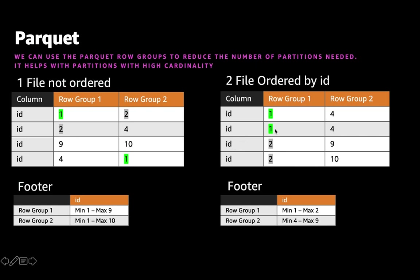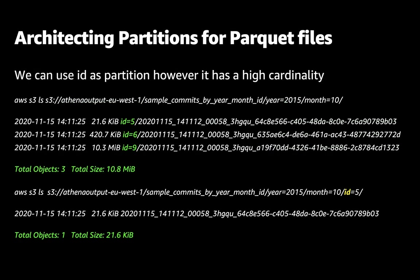However, if your file is ordered, for example row group 1 has values 1 and 2, and row group 2 has values 4, 9, and 10 — then in the footer, row group 1 has min 1 and max 2, and row group 2 has min 4 and max 9. So if you run a query with WHERE ID equals 1, we will decompress only row group 1. Also, if the WHERE clause is ID equals 3, which doesn't exist in this file, we skip both row groups entirely.